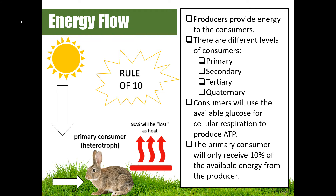Your question might be: where does the other 90 percent go? Only 10 percent is available to an organism that consumes another organism. The answer is the other 90 percent is lost as heat — although 'lost' may not be the best word. As we learned in physical science, energy is not created or destroyed, it only transfers from one form to another. So that's really what we mean when we say that 90 percent of the energy is lost.